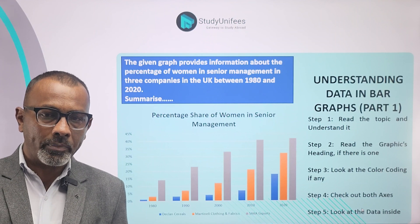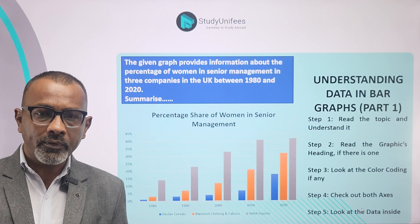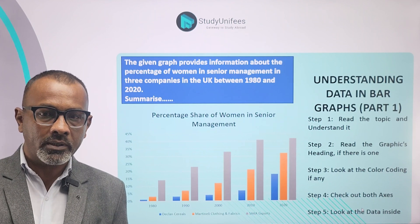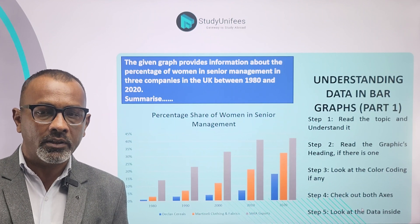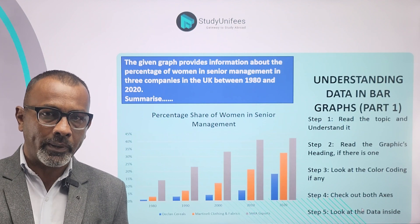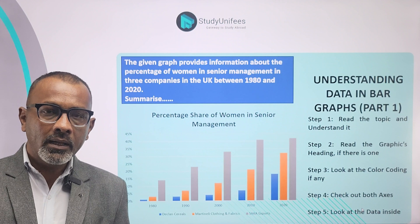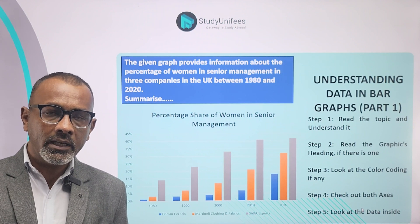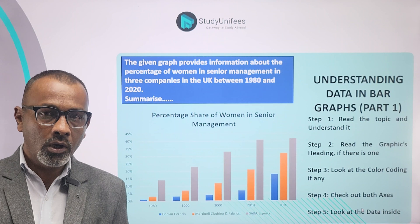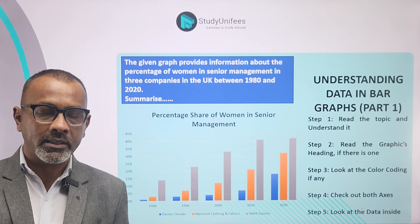Let's read the topic together. The given graph provides information about the percentage of women in senior management in three companies in the UK between 1980 and 2020. By reading the bar graph, we understand that the percentage of women in senior management positions in three companies will be shown over a time period of 1980 to 2020.